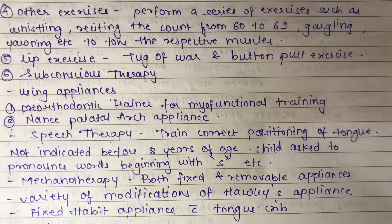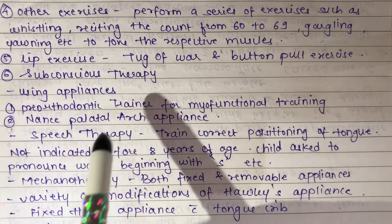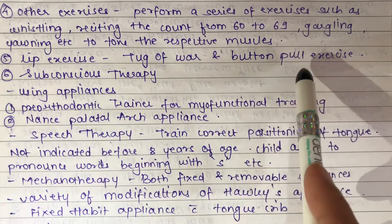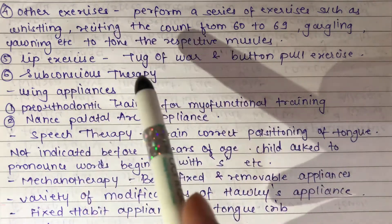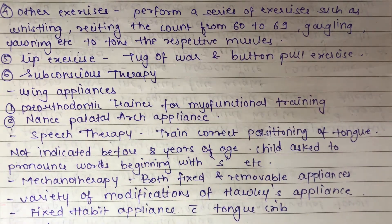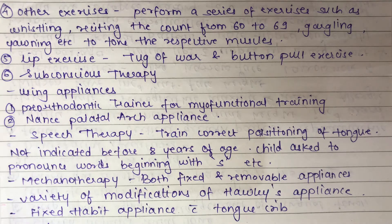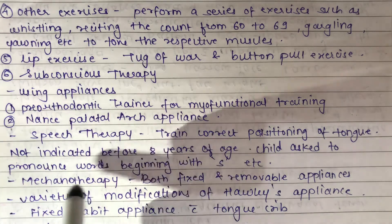Other exercises include asking the child to perform whistling, reciting counts from 60 to 69, gargling, and yawning to tone the respective muscles. For lip exercises, the tug-of-war or button-pull exercise is performed: a string tied to two buttons — one placed between the patient's lips and the other held outside — is pulled outward while the inside button resists the force, thereby strengthening the lips on both aspects.